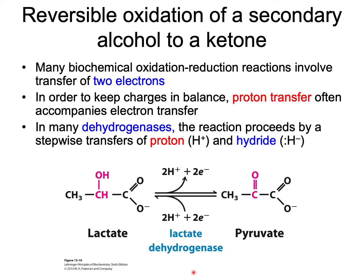The enzyme lactate dehydrogenase converts lactate to pyruvate, or the reverse, pyruvate to lactate. What it is doing when converting lactate to pyruvate is oxidizing lactate to pyruvate. Pyruvate is oxidized — as you can see, it has a ketone, whereas lactate has an alcohol. The reverse process of converting pyruvate to lactate is a reduction.